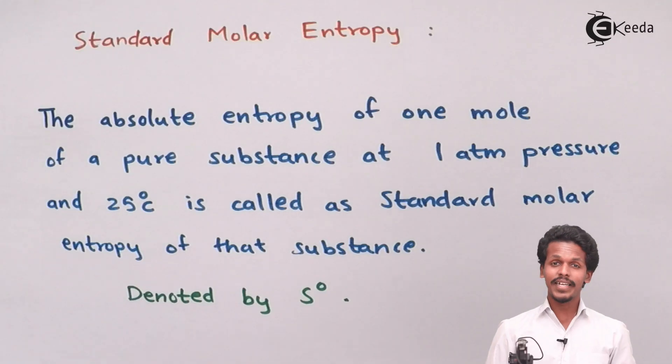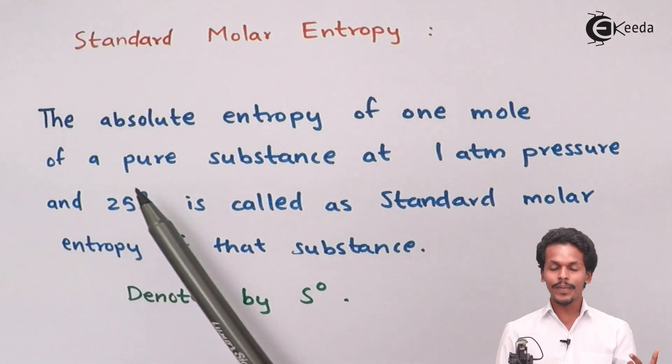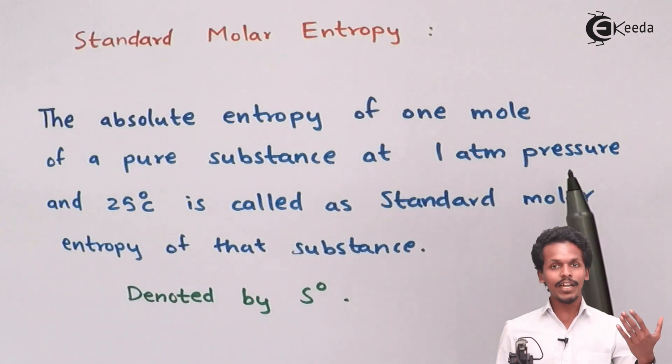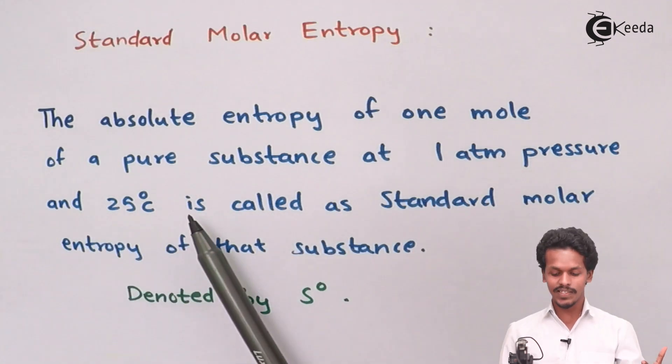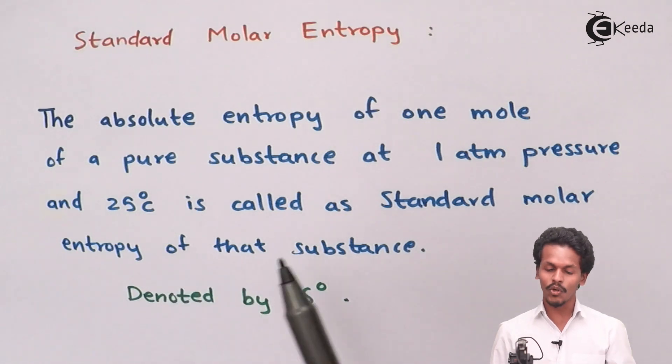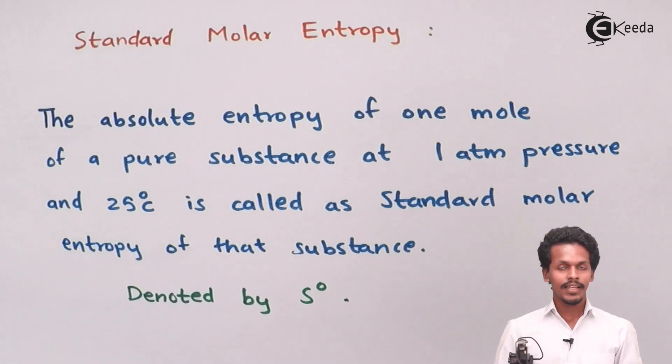It is defined as the absolute entropy of one mole of a pure substance at one atmospheric pressure and 25 degrees Celsius, called the standard molar entropy of that substance. Entropy can be measured above absolute temperature, that is above zero Kelvin.